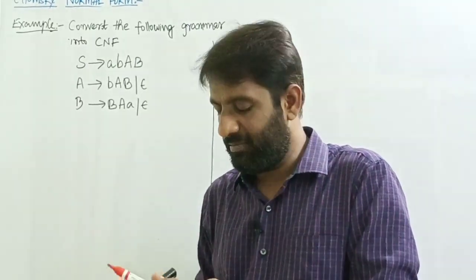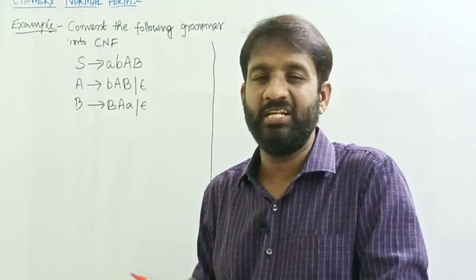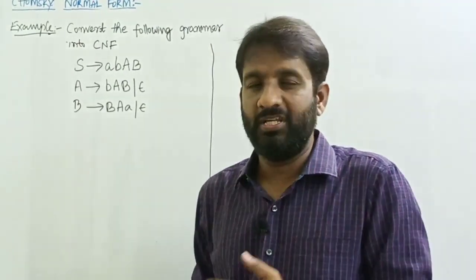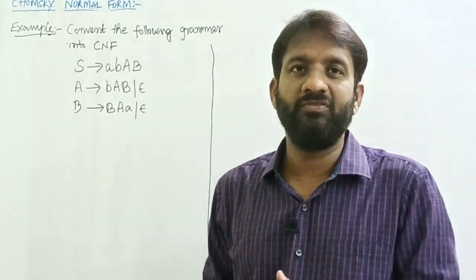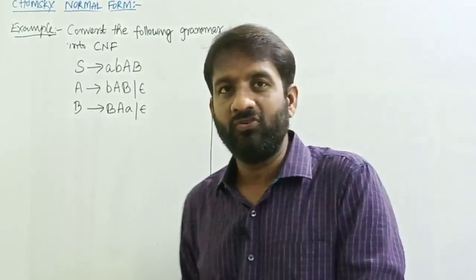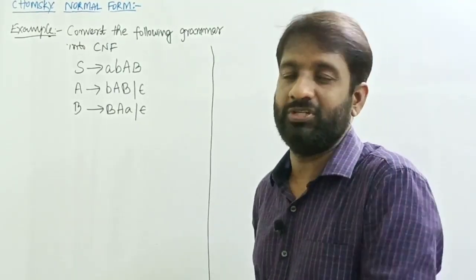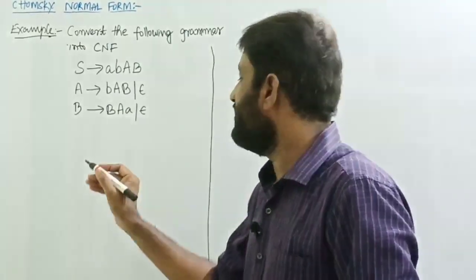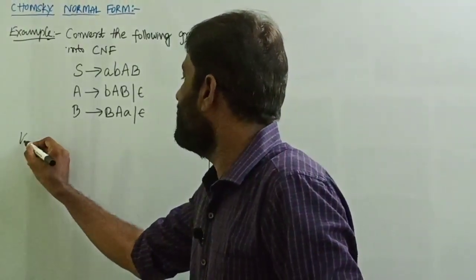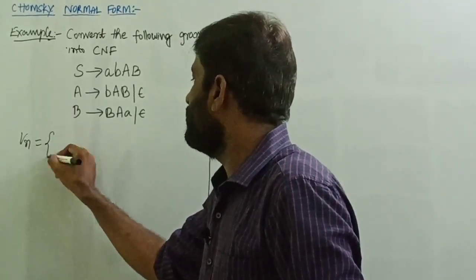As per the procedure, the first step is to simplify the grammar. To simplify the grammar: first, eliminate the epsilon productions; then, eliminate the unit productions; then, eliminate the useless variables from the given grammar.